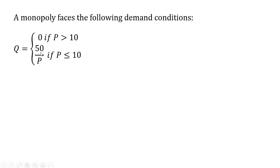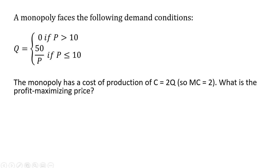Otherwise, quantity demanded will equal 50 divided by the price if the price is less than or equal to $10. The monopoly has a cost of production of C equals 2Q. So in this case, marginal cost, the derivative of the cost equation, is just 2. What is the profit-maximizing price?